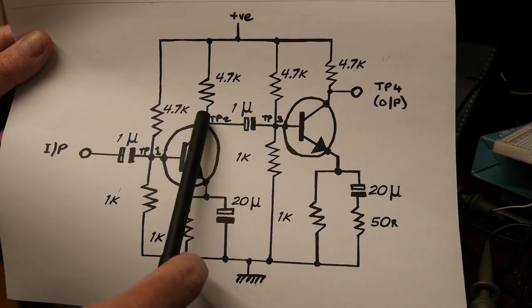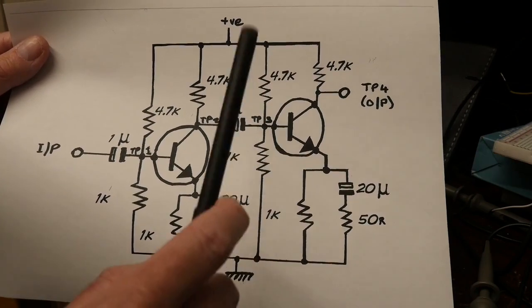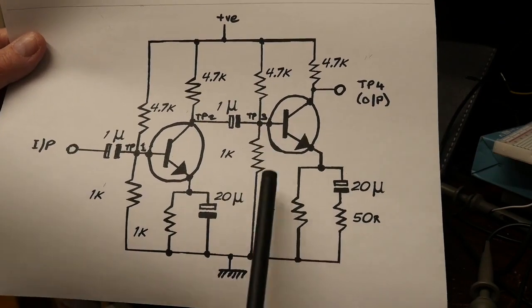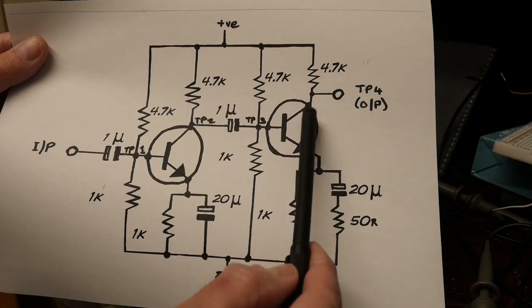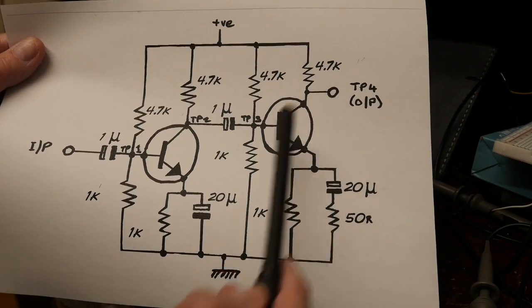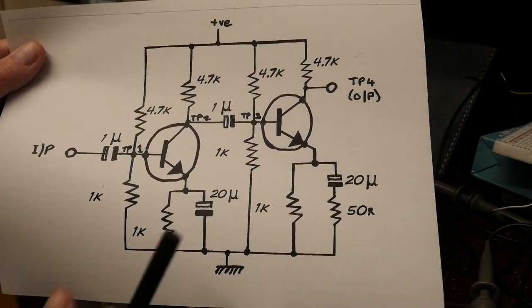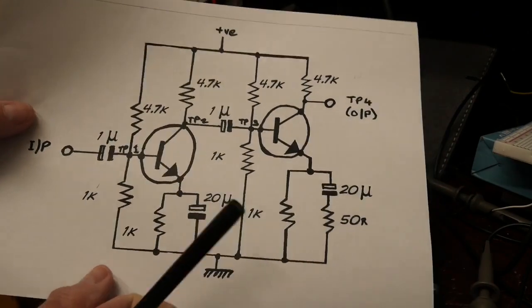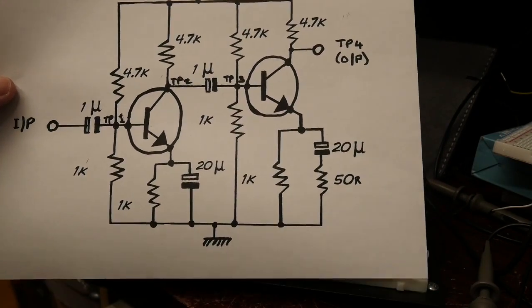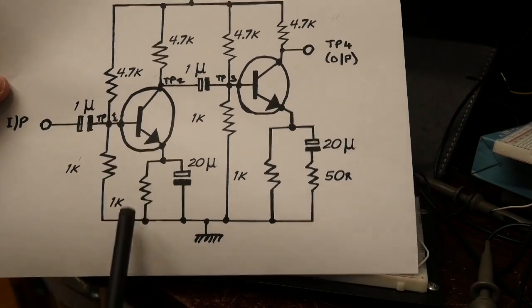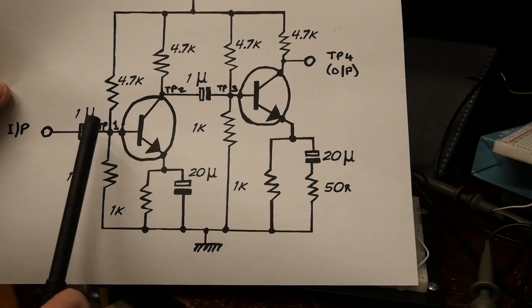The output of that is taken from the collector through another one microfarad decoupling capacitor into the base of transistor two. Again, here's the base bias network, and finally the output is taken from the collector of transistor two, and you can see we've got the decoupling circuits in the emitter side.